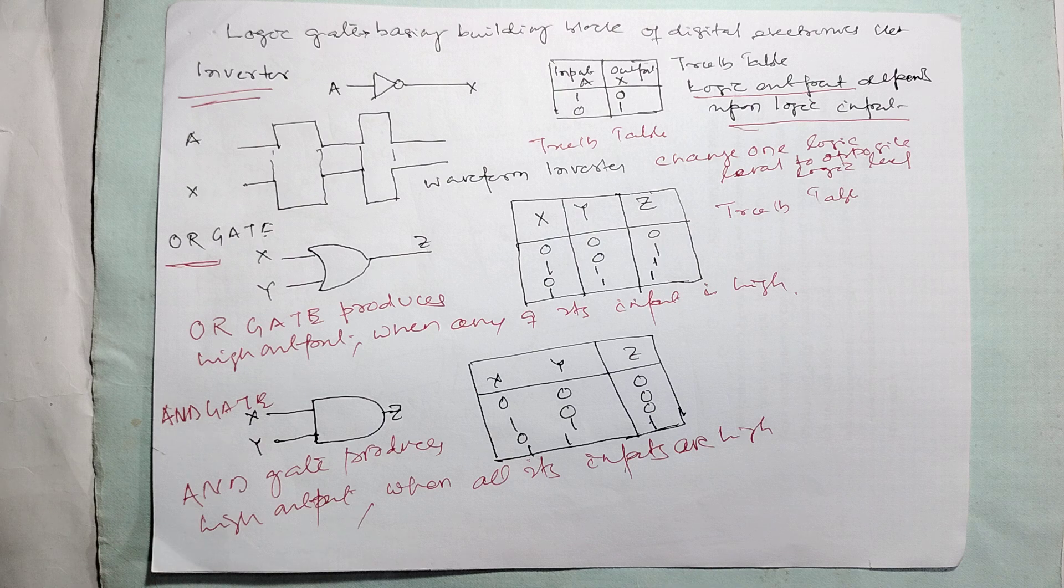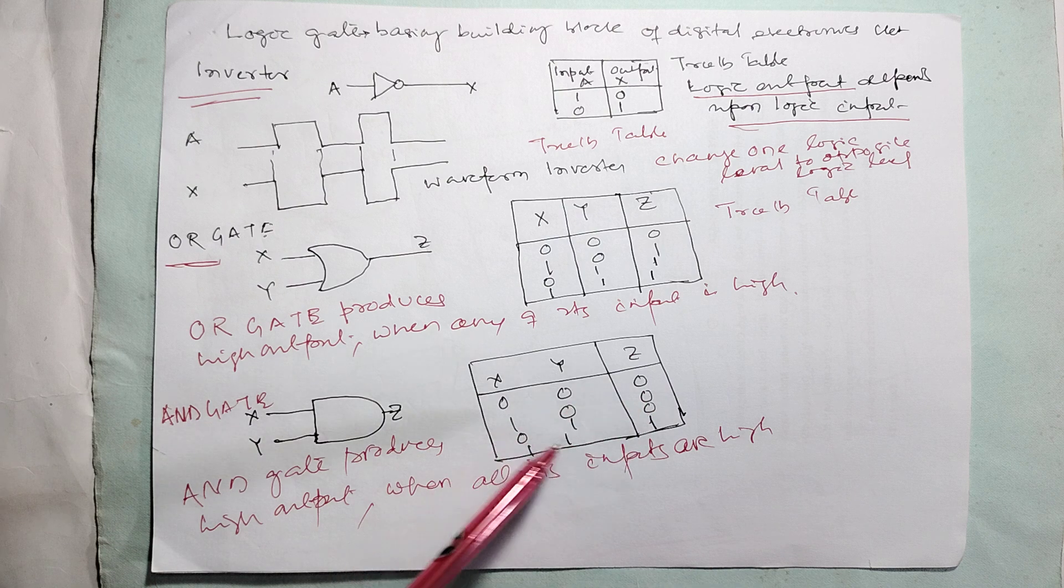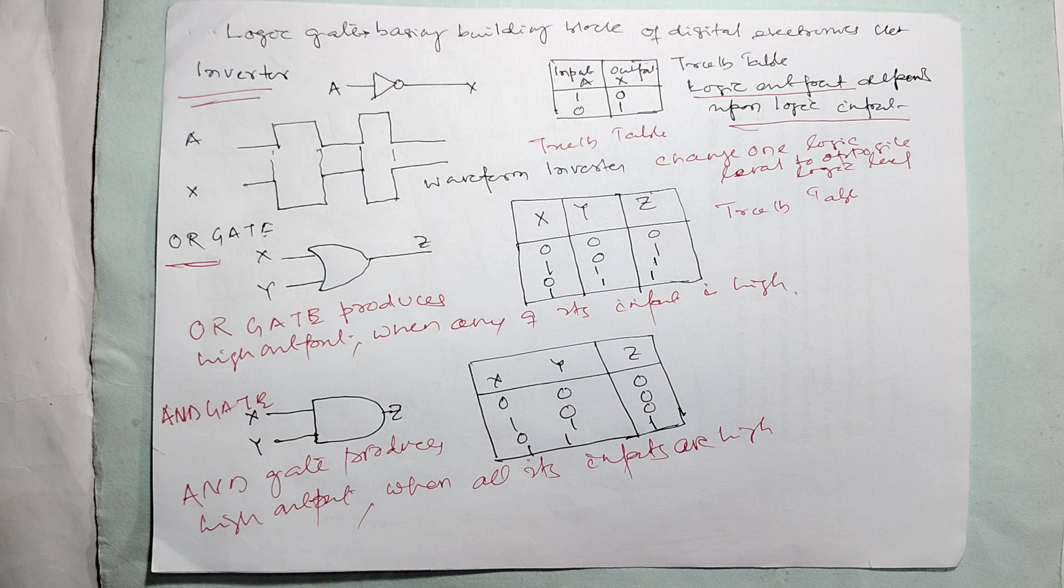AND gate is multiplication. The truth table is: 0-0 gives 0, 0-1 gives 0, 1-0 gives 0, 1-1 gives 1. AND gate produces high output when all the inputs are high.